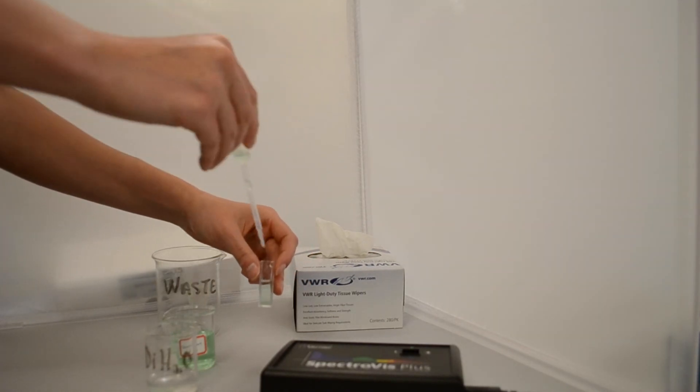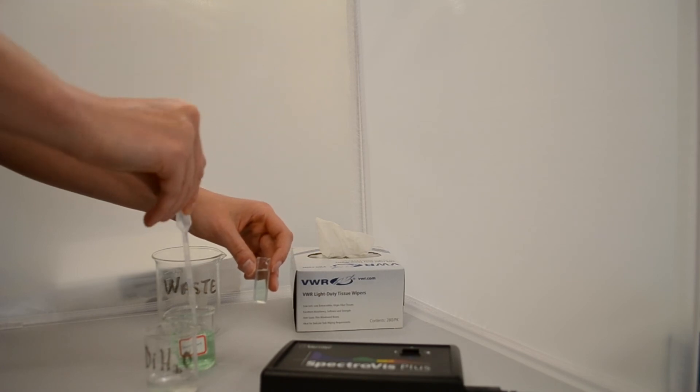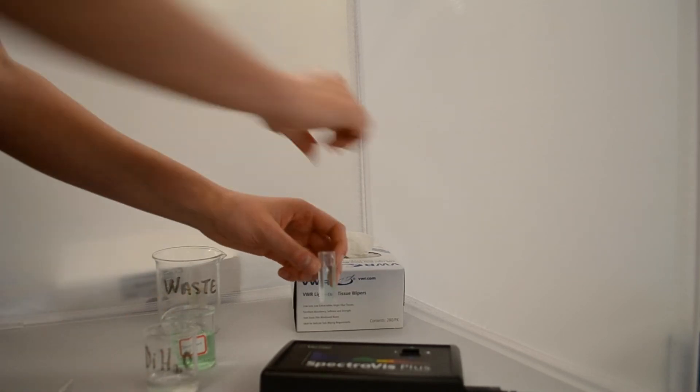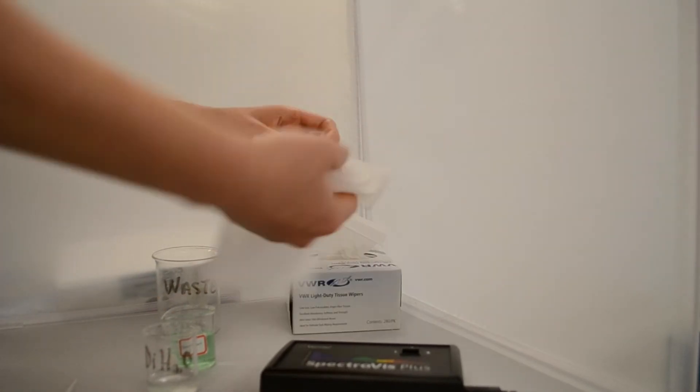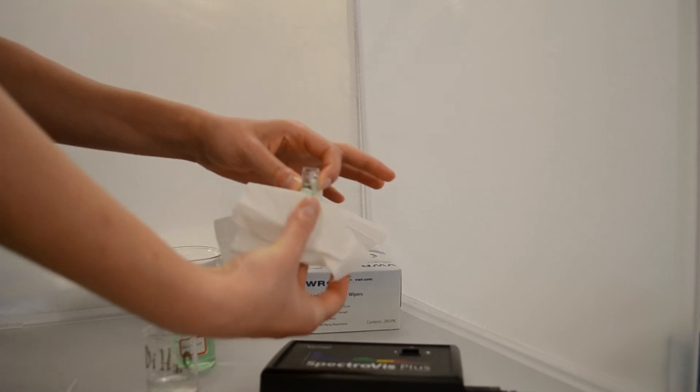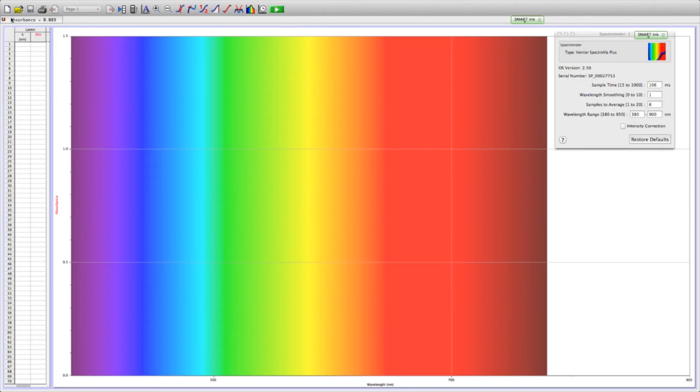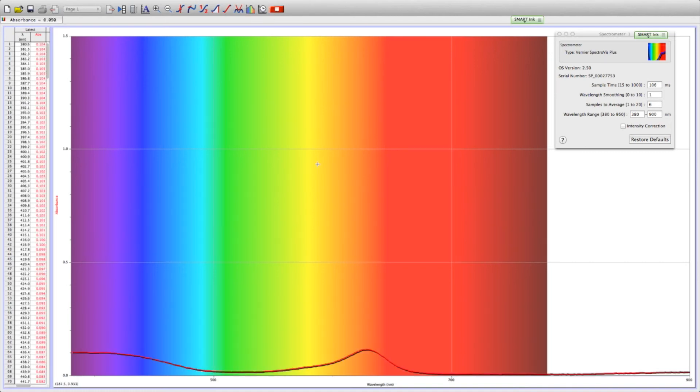Wipe off the cuvette with the chem wipe. Then place it in the spec so that the light is running through the clear sides. Click on the green play button in the top right of the toolbar. Wait about 5 to 10 seconds for the data to be collected.